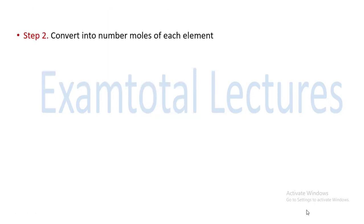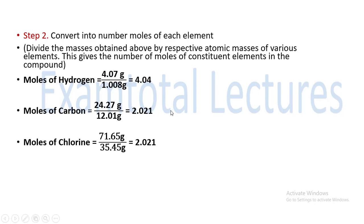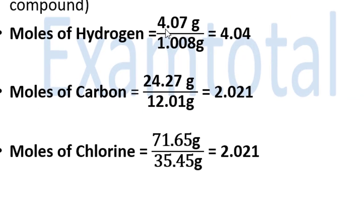Next step: convert to number of moles of each element by dividing the mass obtained by the respective atomic mass. Moles of hydrogen: 4.07 grams divided by its atomic mass. Moles of carbon: 24.27 grams divided by 12.01 grams, which is 2.021 moles. Moles of chlorine: 71.65 grams divided by 35.45 grams, which also comes out to be 2.021 moles.